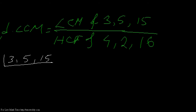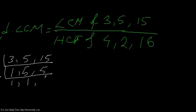Let me find the LCM of 3, 5, and 15. I divide by 3: 3 ones are 3, 5 remains, and 3 fives are 15. Next divide by 5: 1 remains, 1 remains, and 5 ones are 5. So the LCM of 3, 5, and 15 is 3 times 5, which equals 15.